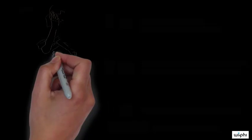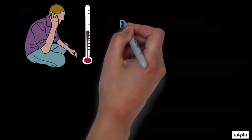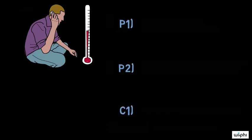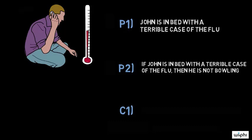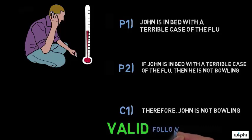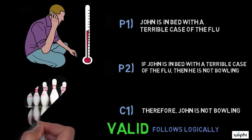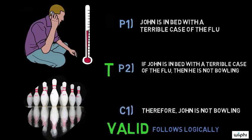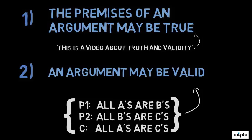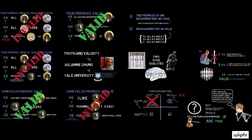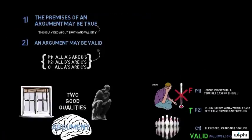Consider the following example. Say that John calls his boss at work one day and tells her that he is in bed with a terrible case of the flu. His boss could use that information to construct the following argument. Premise 1: John is in bed with a terrible case of the flu. Premise 2: if John is in bed with a terrible case of the flu, then he is not bowling. Conclusion: therefore, John is not bowling. This argument is valid — its conclusion follows logically from its premises. So, if John's boss were to see him bowling, what could she conclude? Premise 2 seems untouched by this bit of evidence. Premise 1, however, is in danger. She could conclude that John is not in bed with a terrible case of the flu — it seems he lied. This is just a very simple example, but hopefully it suffices to show that we often use reasoning like this to figure out whether claims are true or false. Thus, it is indeed often very useful for us to know whether an argument is valid, even if we don't know whether its premises are true.